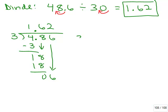You'll get the same answer if you didn't do that. If you just divided 30 into 48.6, well 30 goes into 48 once. 1 times 30 is 30. And then you have 186.